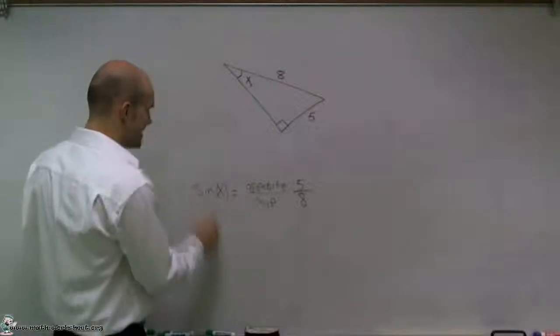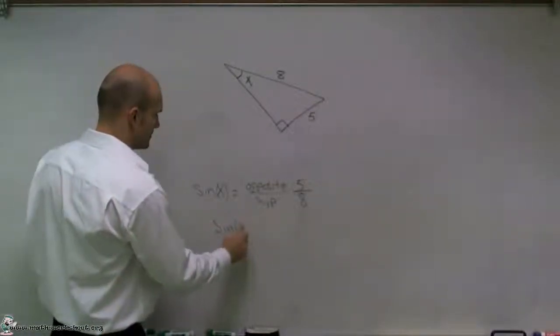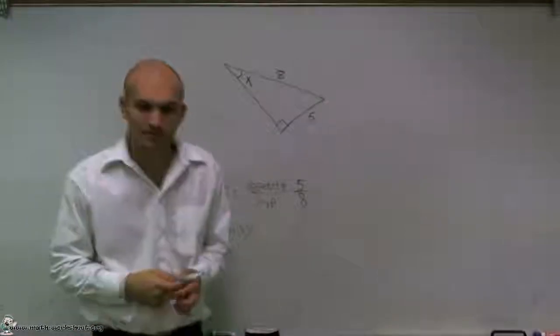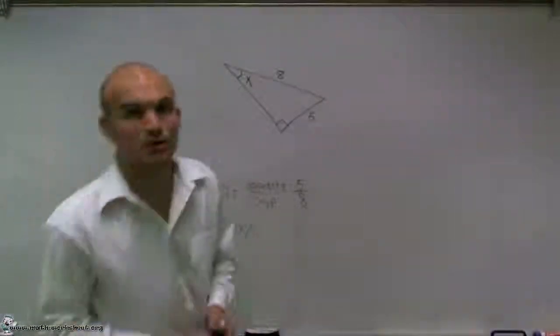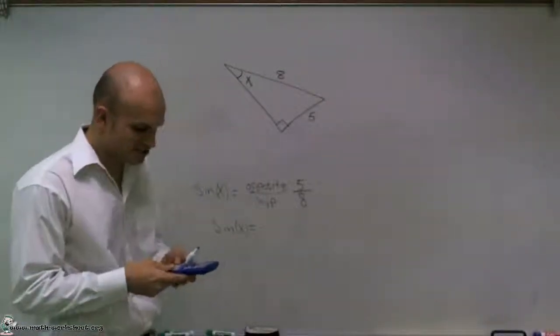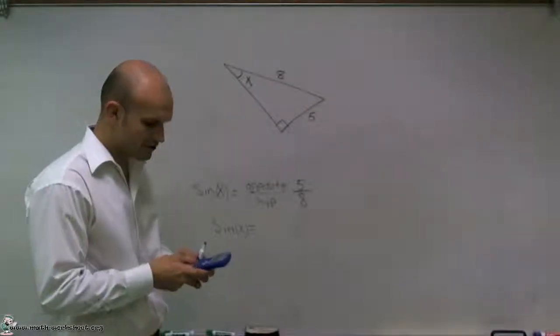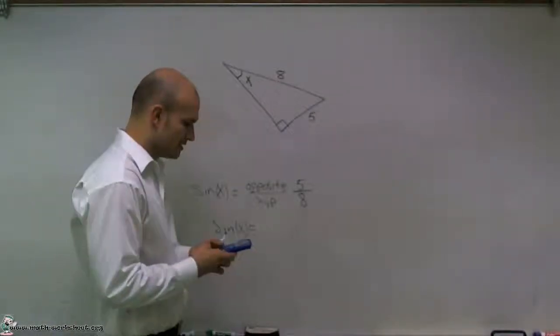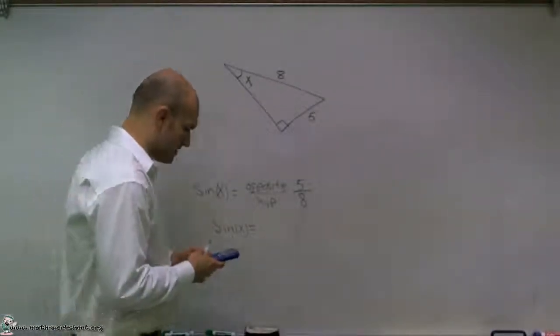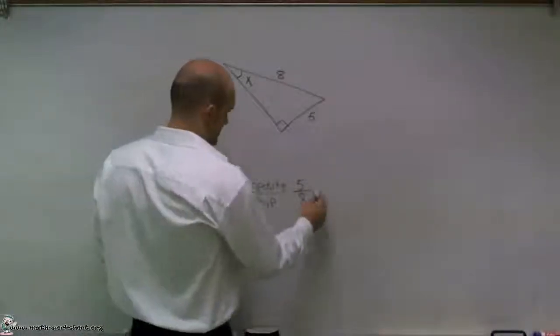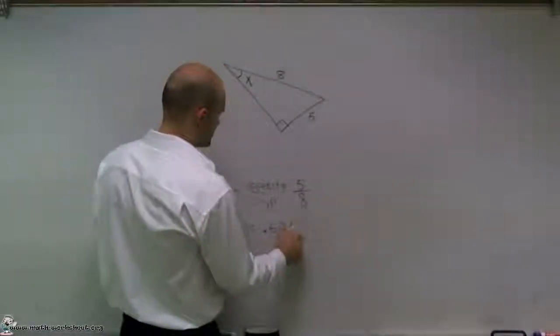So I have sine of x is equal to 5 divided by 8. Well, let's go and see if we can get a decimal approximation for that. So I take 5 divided by 8, and I get 0.625.